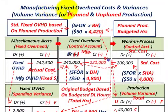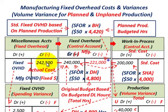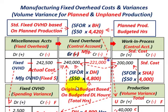We're going to be going over manufacturing fixed overhead costs and variances, looking at the volume variance for planned and unplanned production. We'll trace this fixed overhead cost through T-accounts along with their associated formulas, starting with actual fixed costs moved into a manufacturing overhead control account.